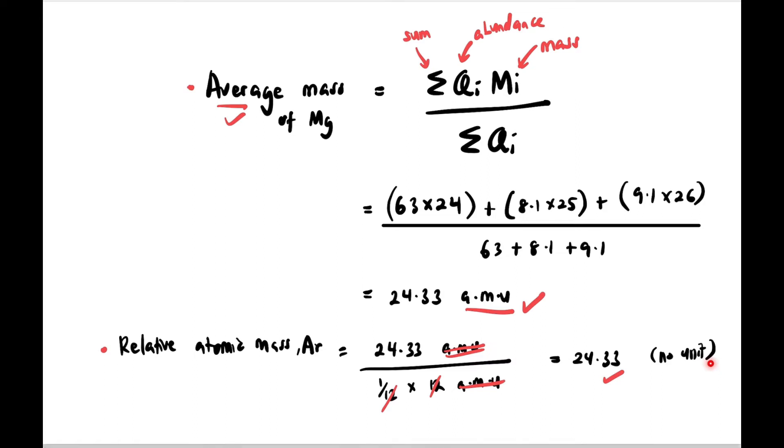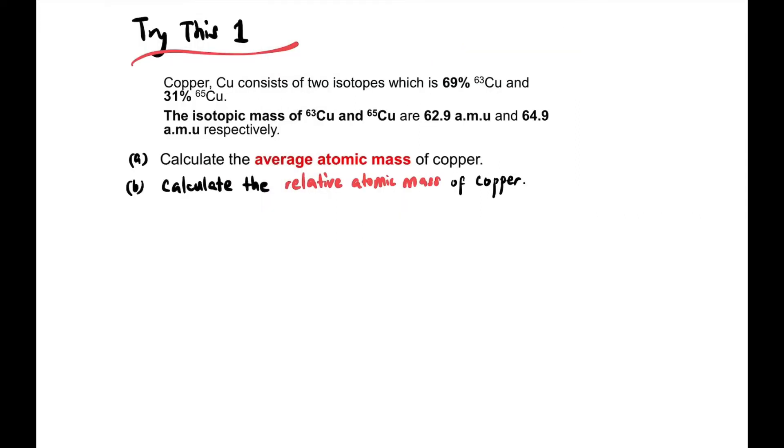Now let's try this question. Copper Cu consists of two isotopes: 69% Cu-63 and 31% Cu-65. Those percentages are qi, the abundance. The isotopic mass for Cu-63 is 62.9 AMU and Cu-65 is 64.9 AMU respectively. The question asks to calculate the average atomic mass of copper.